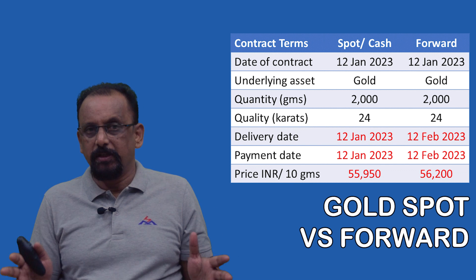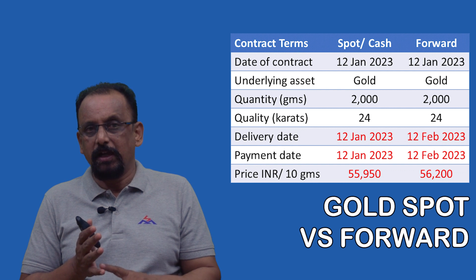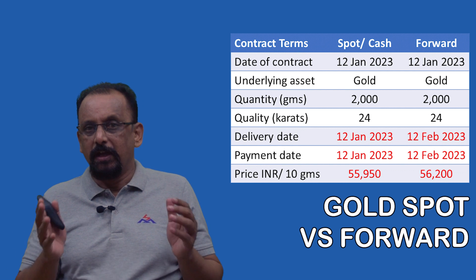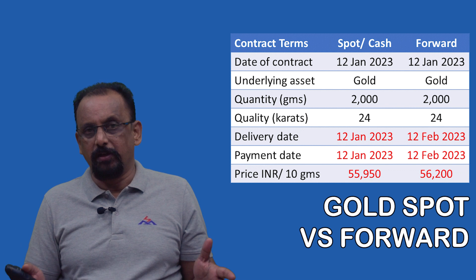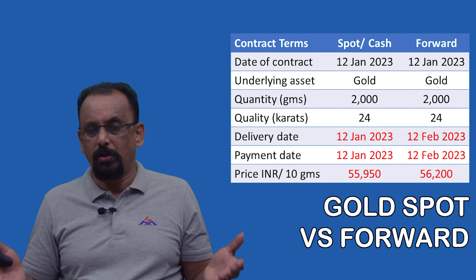As you can see, almost everything is the same between these two contracts, but delivery and payment is one month from now and the rate is different. These are the key differences: a spot contract is for immediate delivery and payment, while a forward contract is for delivery and payment in the future. It is entered into today in order to manage the risk of price fluctuation in the underlying asset, which is gold in this case.